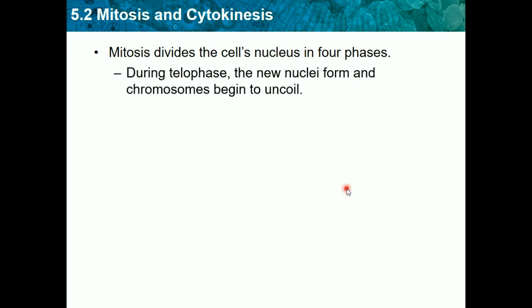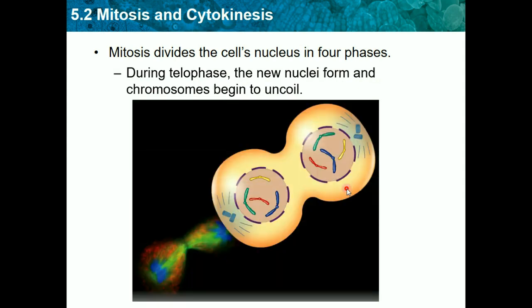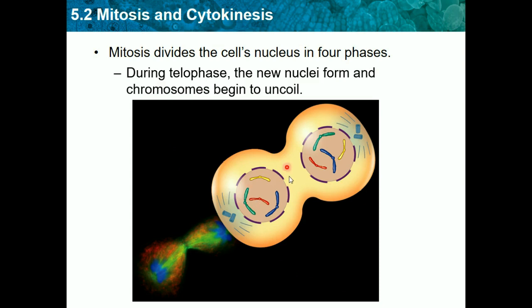Our last phase is telophase, where the new nucleus forms and chromosomes begin to uncoil. Now that all the DNA is on opposite sides, the cells start to form again. We can think of 'telo' as meaning far away — they're all the way on opposite sides of the cell and starting to form new cells. The nucleus is coming back, and the sister chromatids are unwinding, returning to the strands we saw earlier.